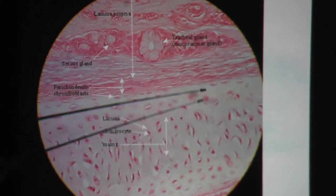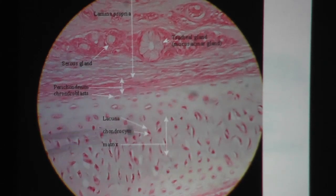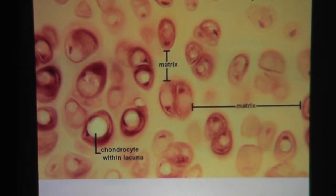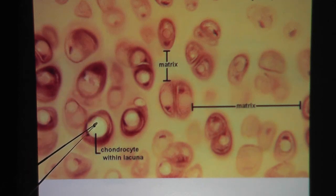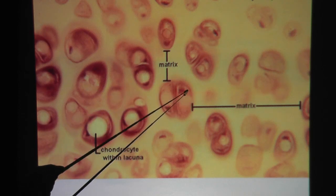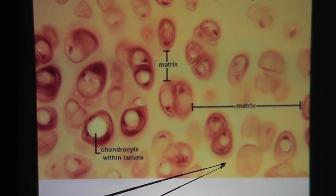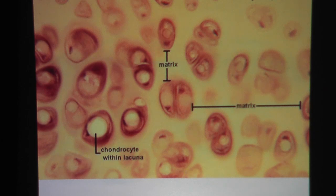From this point on down is all hyaline cartilage. These big things are chondrocytes in lacuna. At high power you clearly see the chondrocytes in lacuna. Outside of the lacuna, that would be the matrix. The matrix here looks very similar throughout and it looks like a watercolor. So this is hyaline cartilage.